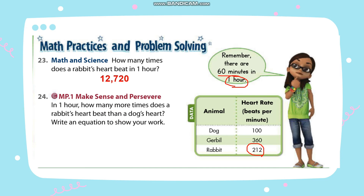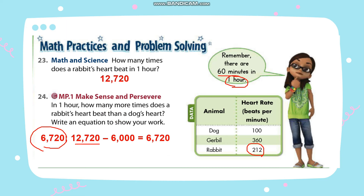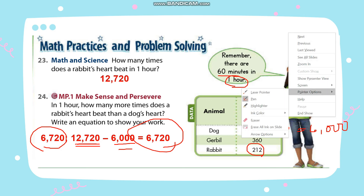Number 24: In one hour, how many more times does a rabbit's heart beat than a dog's heart? Write an equation to show your work. The answer is 6,720. We simply subtract 12,720 minus 6,000. Where did 6,000 come from? From the dog's heart rate, which is 100 multiplied by 60. So 100 multiplied by 60 is 6,000. To get the difference, subtract 12,720 minus 6,000. The final answer is 6,720.